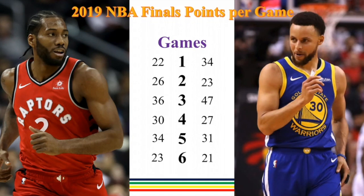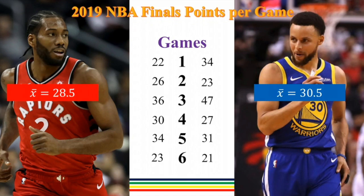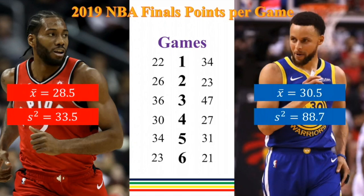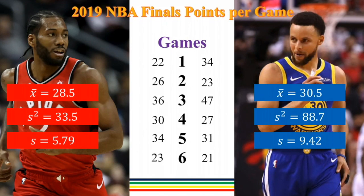Let's solve their mean, variance, and standard deviation. The mean points per game is 28.5 for Leonard and 30.5 for Curry. That means Curry averages more points than Leonard. What can you observe between their standard deviations? Leonard has a smaller standard deviation compared to Curry. Therefore, we can conclude that the scoring of Leonard is more consistent compared to Curry's scoring because Curry has a larger standard deviation of 9.42. That is one way to compare how dispersed or how scattered the data are in a data set.